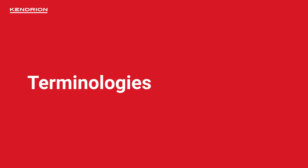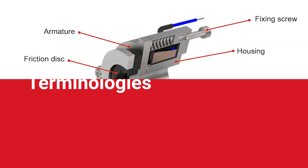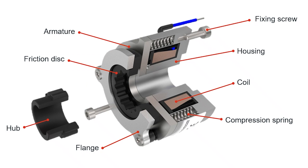Before we continue, we need to have a look at the terminologies of a typical spring applied brake. This brake is a member of the servo line brake, but it is also representative of other spring applied brakes.